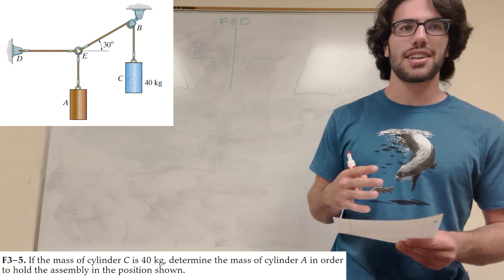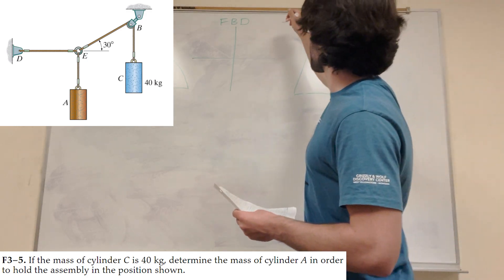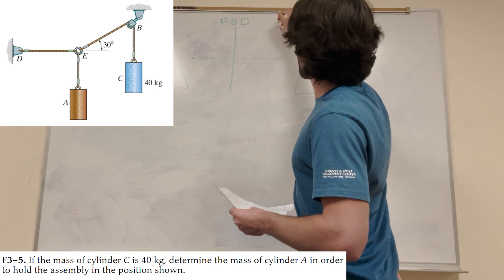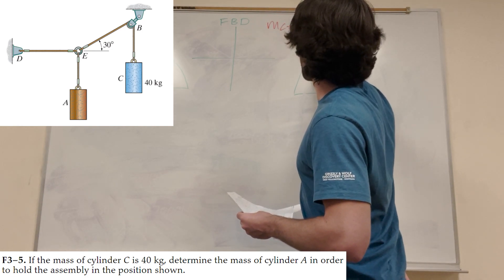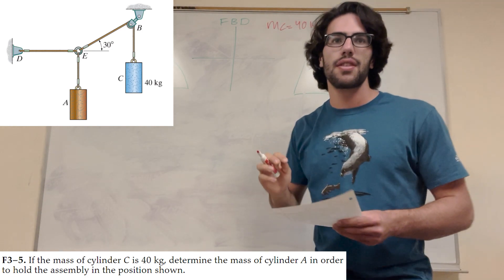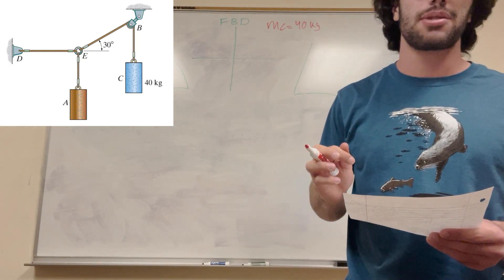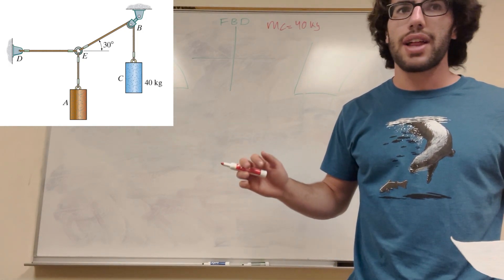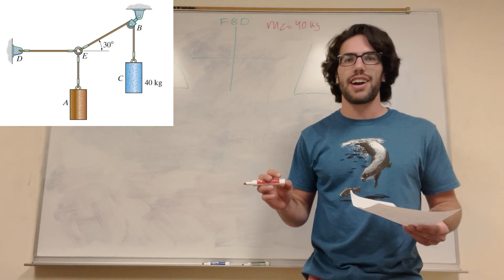So we have the mass of the cylinder is 40 kilograms. So the mass of C is equal to 40 kilograms. Let's start there. And the mass of cylinder A is what we're trying to find. So how are we gonna do that? Let's get started.